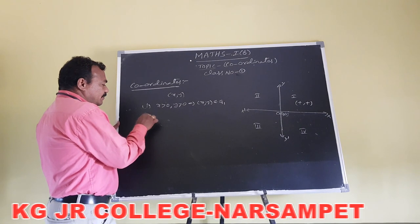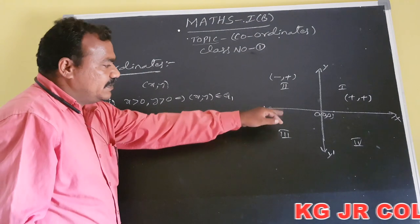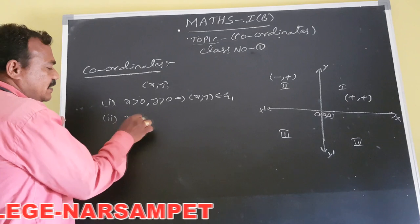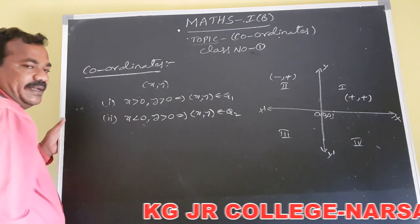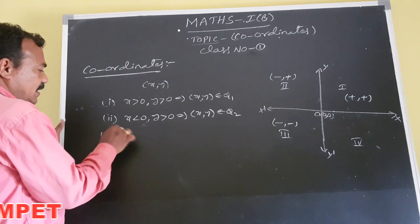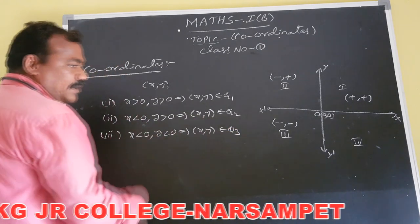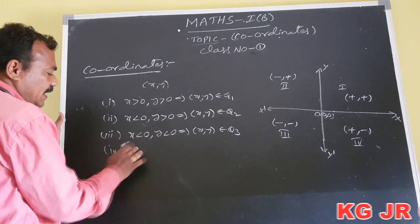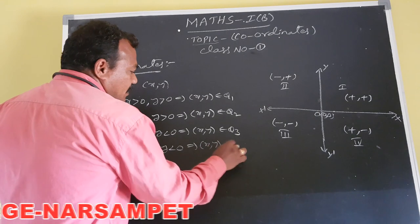To summarize: in the first quadrant, both x and y coordinates are positive. In the second quadrant, x is negative and y is positive. In the third quadrant, both x and y are negative. In the fourth quadrant, x is positive and y is negative. For example, the point (2, 3) belongs to the first quadrant, (-4, 3) belongs to the second quadrant, (-x, -3) belongs to the third quadrant, and (10, -2) belongs to the fourth quadrant.